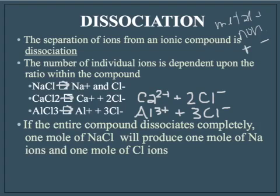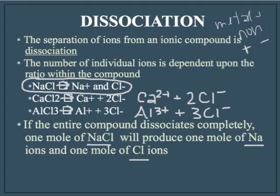If the entire compound dissociates, which is what generally happens with ionic compounds, then for every one mole of reactant compound it will produce corresponding moles of ions. For NaCl, one mole of the compound produces one mole of sodium ions and one mole of chloride ions. For calcium chloride, one mole produces one mole of calcium and two moles of chloride. For aluminum chloride, one mole of aluminum and three moles of chloride.